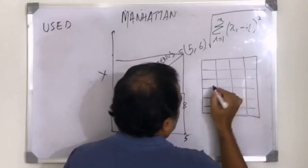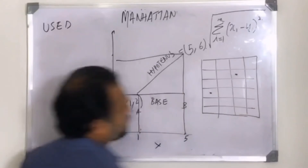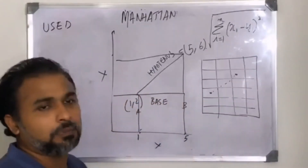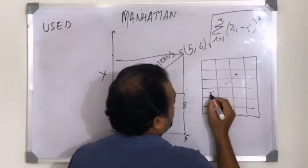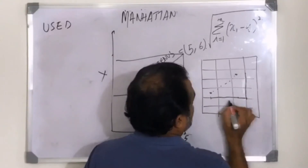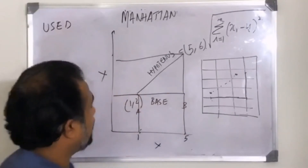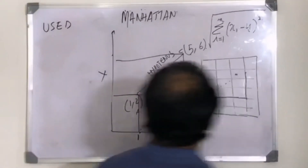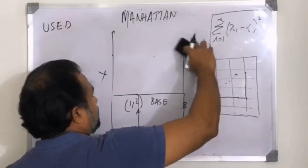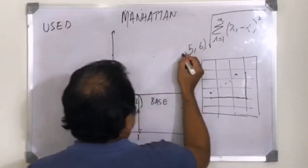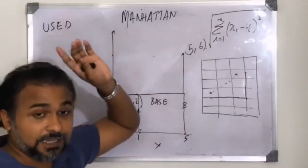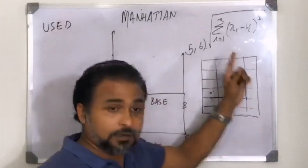Say you are in one building and want to reach another building. A navigation system won't show you a straight-line distance because you can't jump over buildings. You have to take horizontal and vertical paths. So your total travel distance is this path plus this path — not the diagonal. That's why Euclidean distance doesn't apply here. Manhattan distance only counts horizontal and vertical movements, not aerial distance.